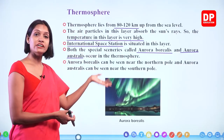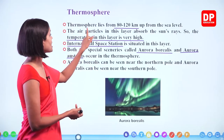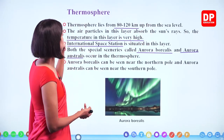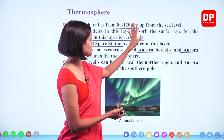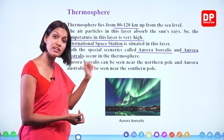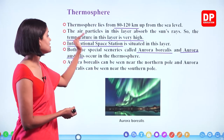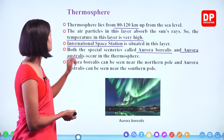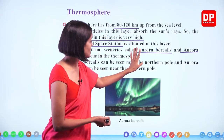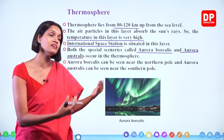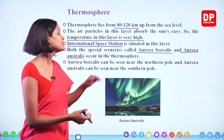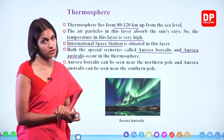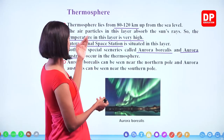To summarize the thermosphere: it lies from 80 to 120 km above sea level; air particles absorb the sun's rays so temperature is very high; the ISS is situated in this layer; and the Northern Lights (Aurora Borealis) and Southern Lights (Aurora Australis) also occur in the thermosphere.